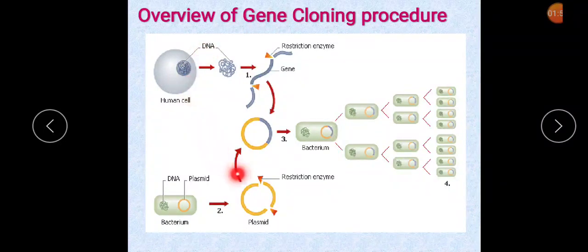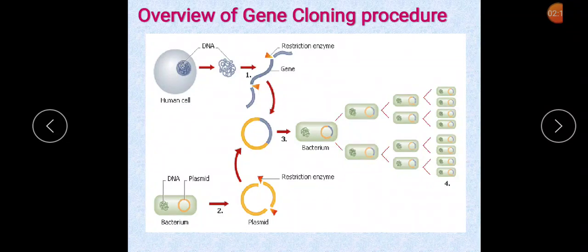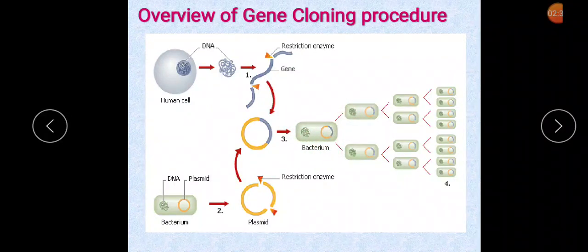This is an overview of the gene cloning procedure. The research on genetic engineering is centered on in vitro joining of DNA fragments of different origins, mediated by highly specific enzymes, to produce chimeric or recombinant DNA. This recombinant DNA is then introduced into an appropriate host organism wherein it multiplies. Thus, genetic engineering is also called recombinant DNA technology.